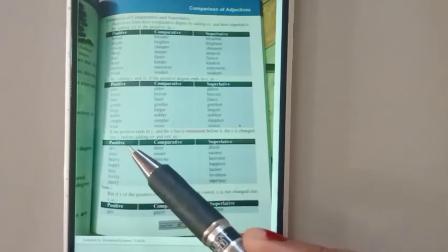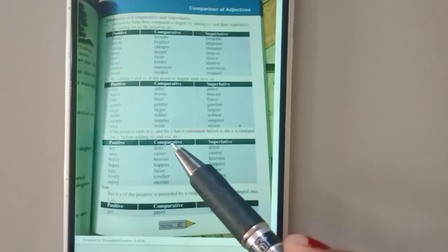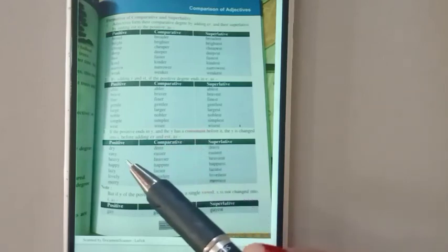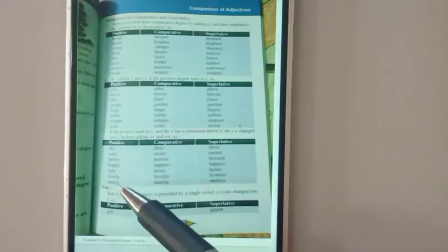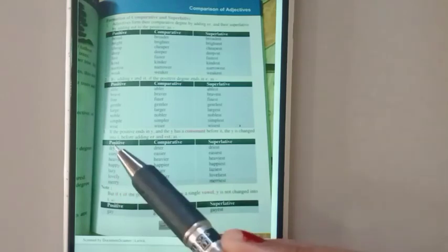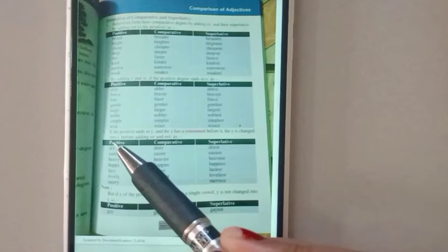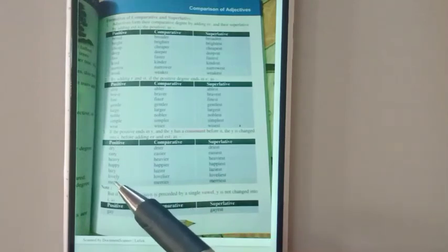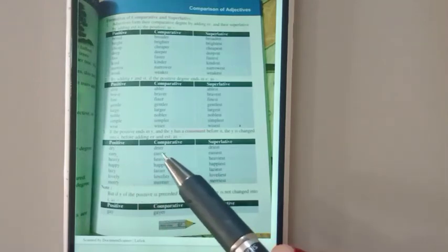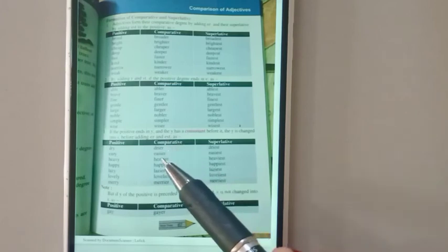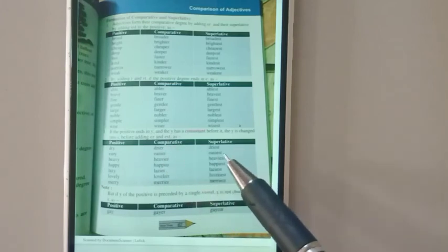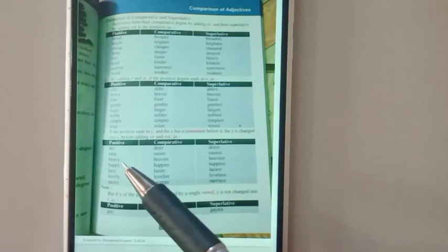To I before adding ER and EST. If we find Y at the end of the adjectives and there is a consonant before the Y, we have to omit this Y and put I instead of this Y. And then add ER in comparative degree and add EST in superlative degree. So let us read.